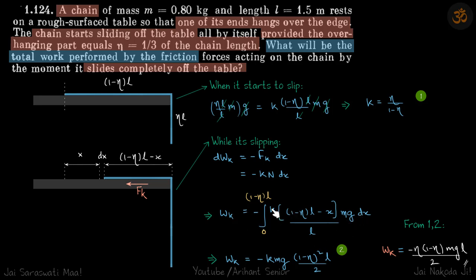This is the total work done, so we integrate it. Limits of x will be from 0 to (1 - eta)*l. We do that and get our answer in terms of k. The value of k we'll put from our initial condition and get our final answer.